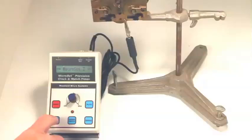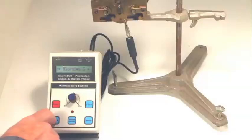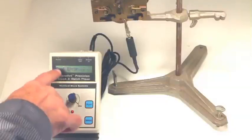One place to start might be to measure the beat error of the clock. So when microset is displayed on the screen, press the mode button until you see beat error.